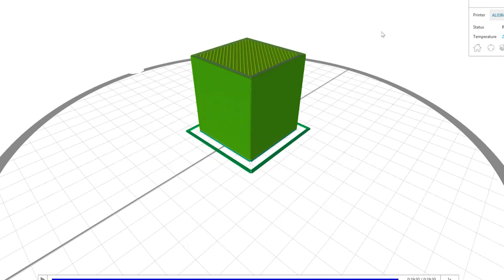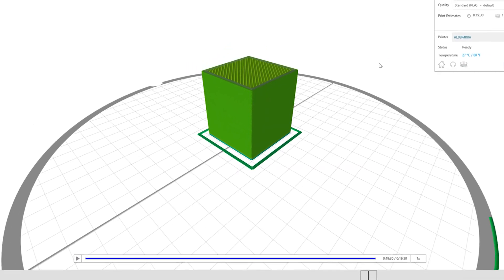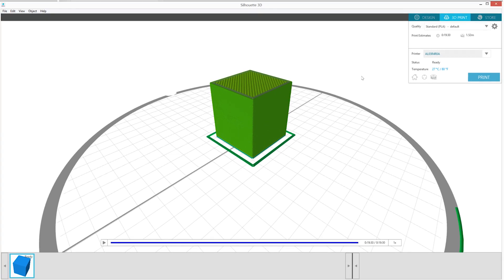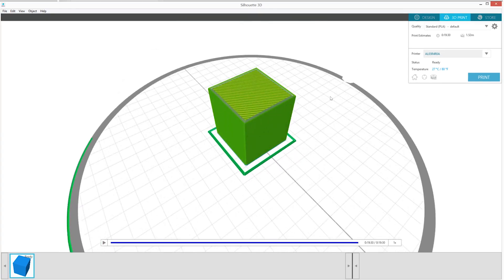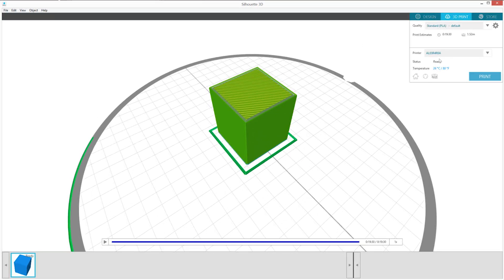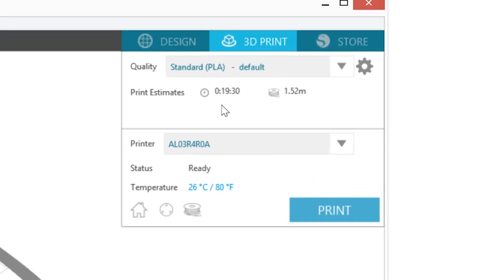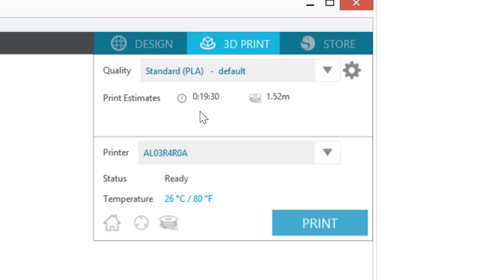The Silhouette 3D software will then slice or prepare your object for 3D printing. When your object is ready, you'll see a rendered preview of each filament layer that will be printed. In the box in the upper right-hand corner, you'll see information including the print profile you are using, the print time estimate, an estimate of the amount of filament that will be used, which printer you are using, the connection status of the Alta, and the current temperature of the print head.